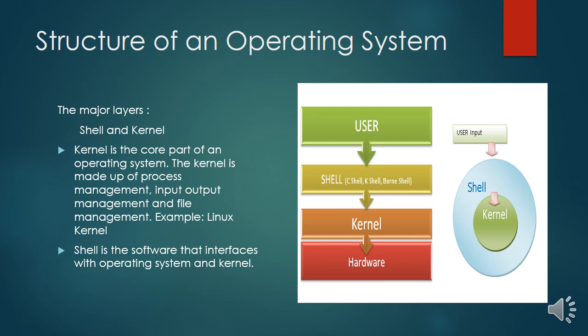There are different kinds of kernels for different operating systems. For example, Linux has the Linux kernel, Windows has the Windows NT kernel, and Mac OS has the Darwin kernel. The shell resides above the kernel and is a software that interfaces between the user and the operating system.